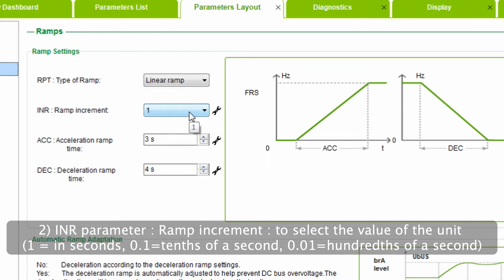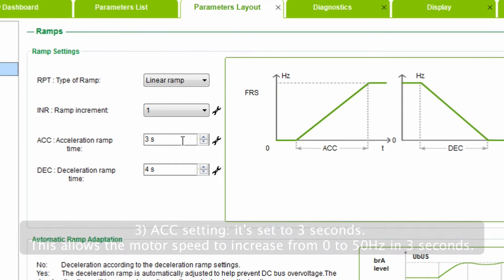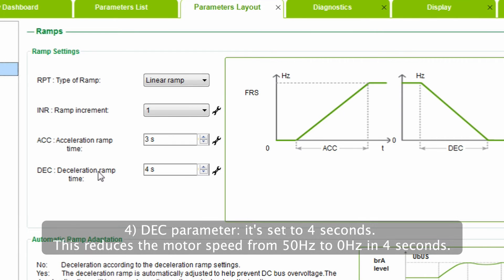Number 2: INR parameter, ramp increment, to select the value of the unit. Number 3: ACC setting. It's set to three seconds. This allows the motor speed to increase from zero to 50 hertz in three seconds.